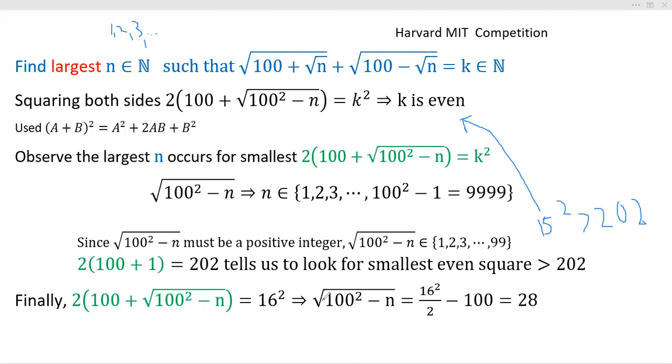We got it down to where this whole thing equals 28. If you square both sides and isolate, you'll end up with n equals—let's see—100²...